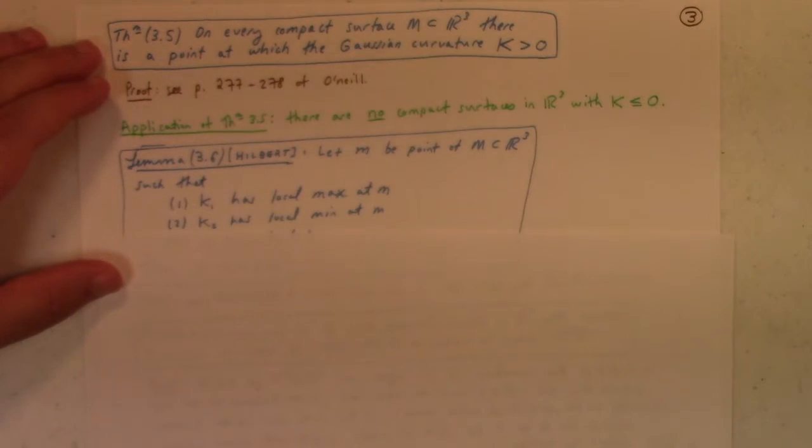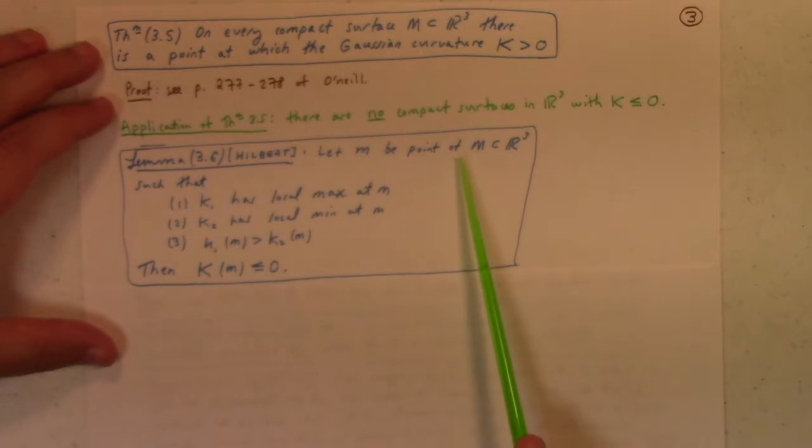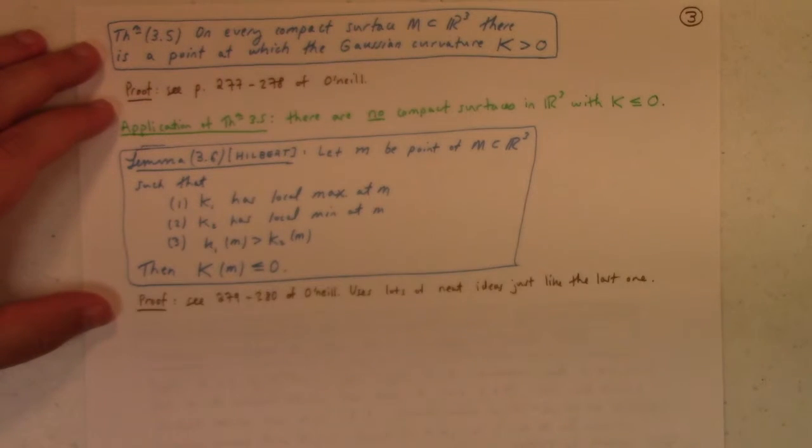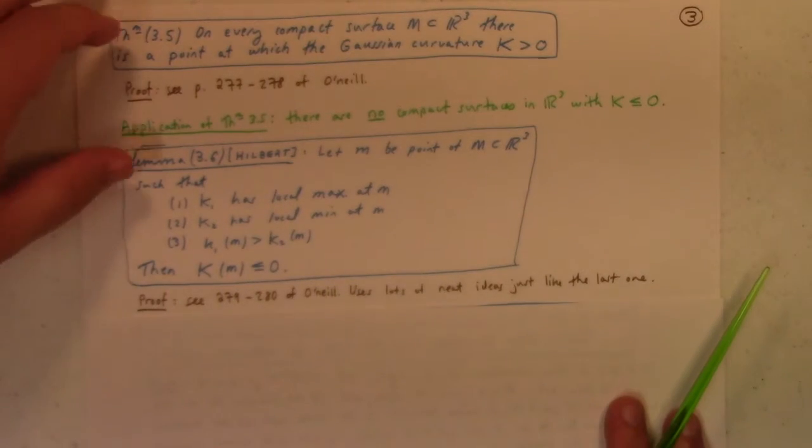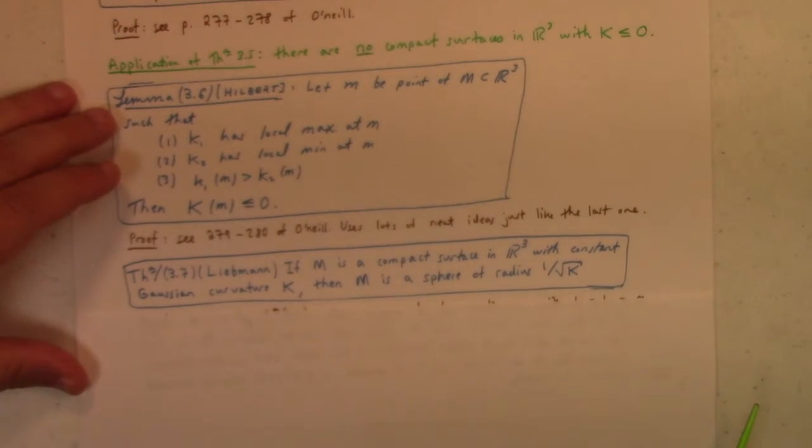Hilbert gave us this lemma, which, again, is pretty involved, the proof of this. If m is a point of the surface, big M, such that k1 has a local max at m, k2 has a local min at m, k1 is greater than k2 of m, then the Gaussian curvature is less than or equal to 0. This is on page 279 at 280 of O'Neill. It's got lots of nice ideas in the proof. I probably should do it, but I'm being lazy. I hope you can forgive me.